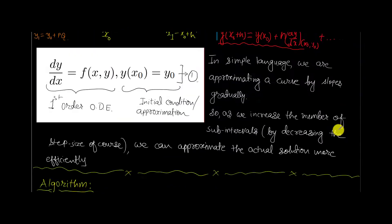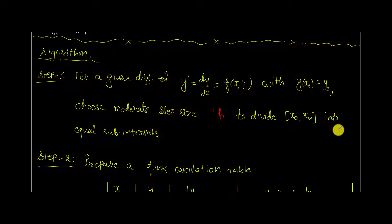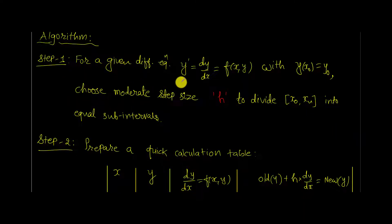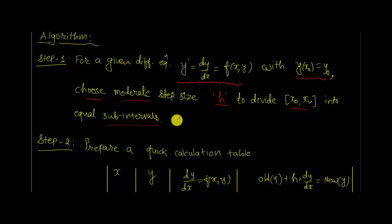Now let's see how to implement this in a few steps for solving problems. Before we dwell into problems, let's start with the algorithm. Step number one: you will be given a differential equation y' equal to dy by dx equal to f, with the initial condition y at x0 equal to y0. We will choose a moderate step size h to divide x0 and xn into equal sub-intervals, minimizing the step size to get the maximum number of equal sub-intervals for the desired accurate result.